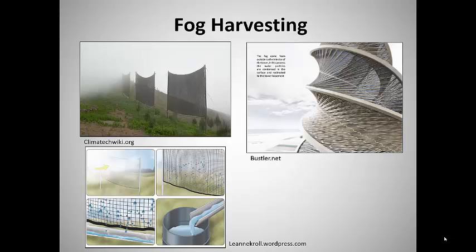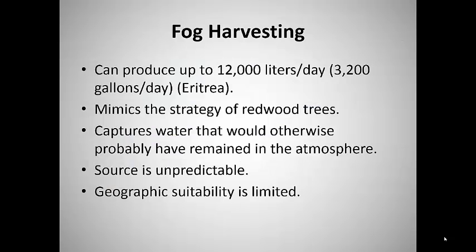Fog harvesting can be considered an interesting variation on rain harvesting. In dry areas that are subject to frequent fog, moisture can be extracted from the fog by letting the droplets collect on a net or similar structure. This process has produced up to 12,000 liters per day in Eritrea in northeastern Africa, in a process that mimics the way in which redwood trees get much of their water. Of course, this process works only when fog is present and has somewhat limited geographic suitability.